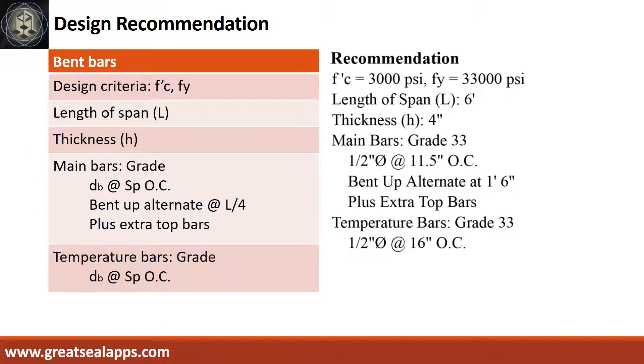Design recommendation as follows. FC prime equals 3000 PSI. FY equals 33,000 PSI. Length of span is 6 feet. Thickness is 4 inches. Main bars of grade 33. Half inch diameter at 11.5 inches on center. Bend up alternate at L over 4 plus extra top bars. Temperature bars of grade 33. Half inch diameter at 16 inches on center.